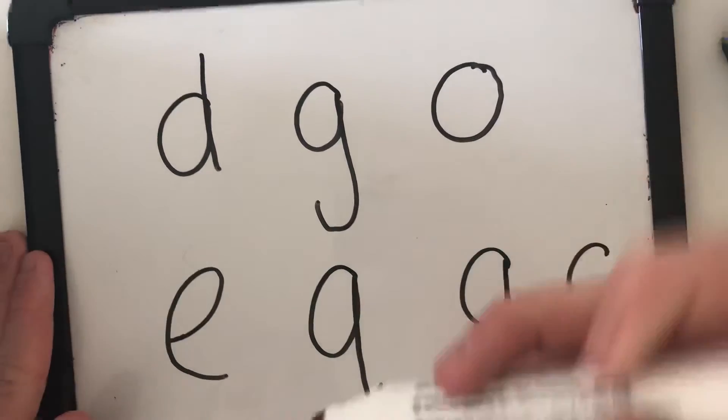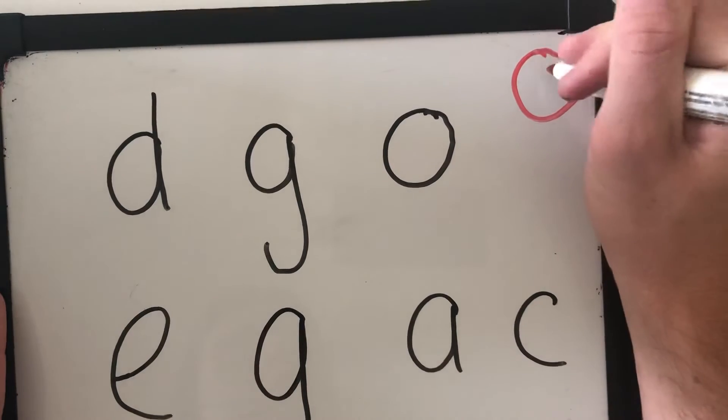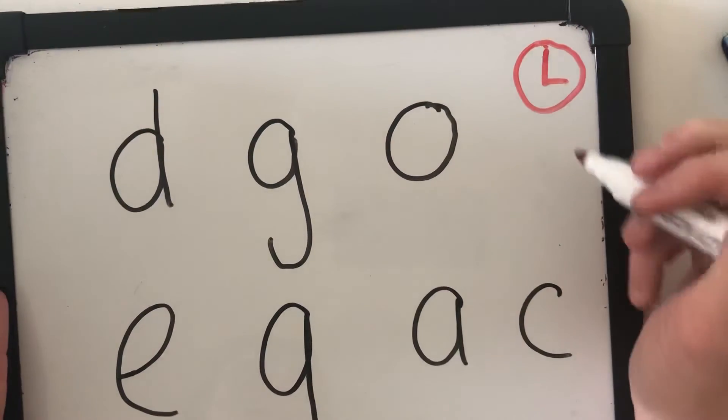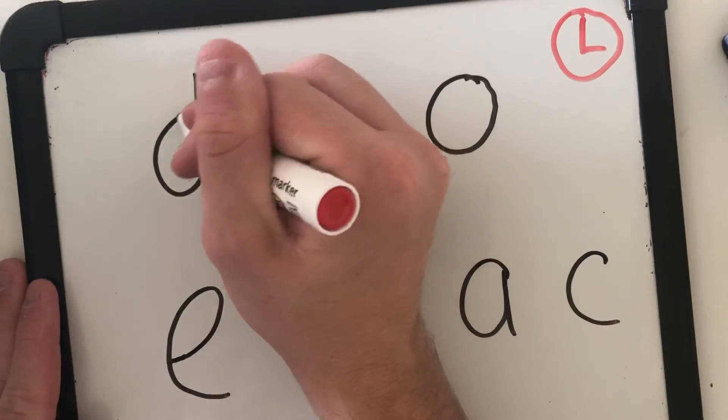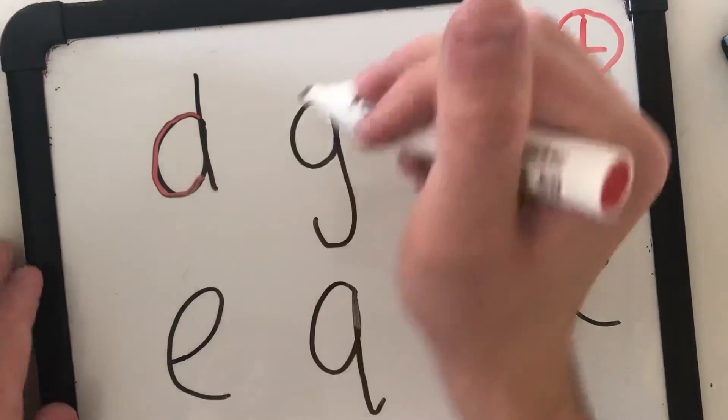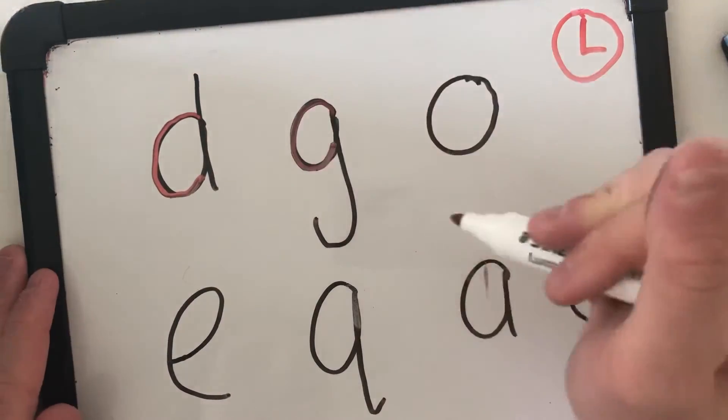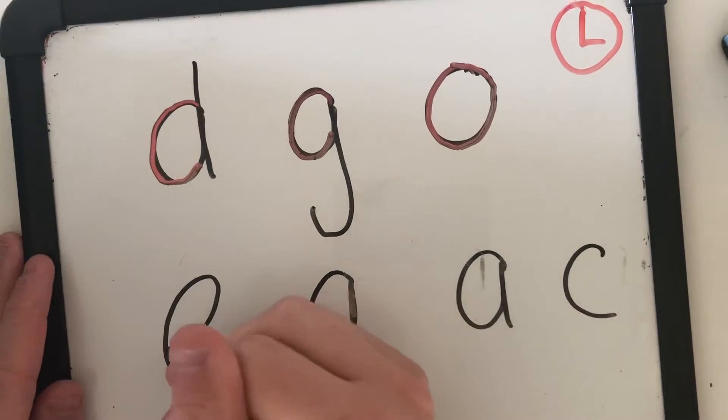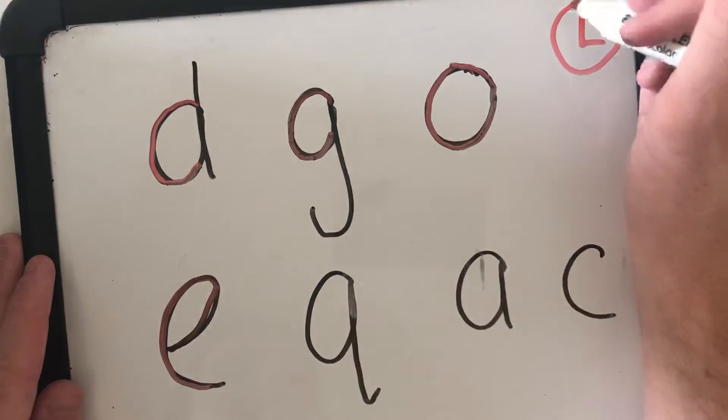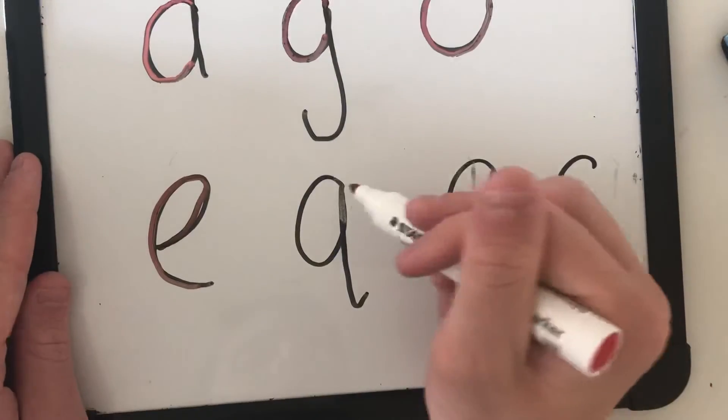And of course we have our clock, and anti-clockwise is going the opposite direction. The letter D goes the opposite direction. The letter G. The letter O goes the whole way around. The letter E still goes this way. The letter Q.